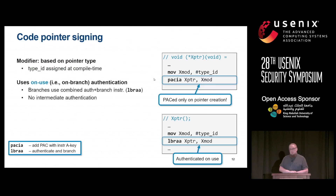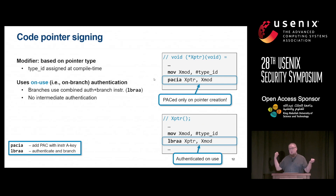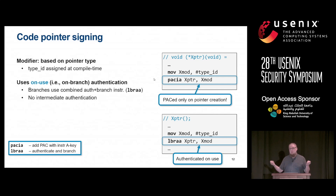For code pointer signing, we use the type of the pointer — specifically, the function pointer signature — to generate the modifier. We use what we call on-use authentication. We instrument the creation of the pointer and then, only when the pointer is actually used, we instrument that use location. This has the nice property that we don't need to care about what happens to the pointer in between — it doesn't matter whether the pointer goes to memory or not.